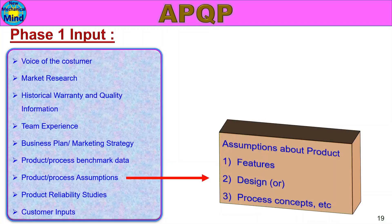Product and Process Assumptions: assumptions about product features, design or process concepts, etc. When we do not yet have a product or process, what we can do — the features, design, and concepts — we will assume. These assumptions are important in the planning phase.